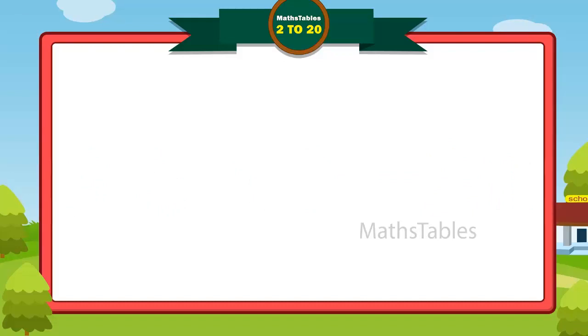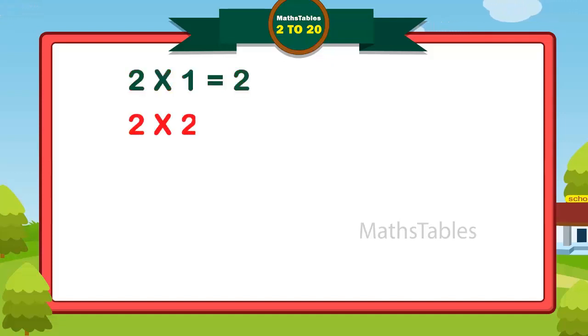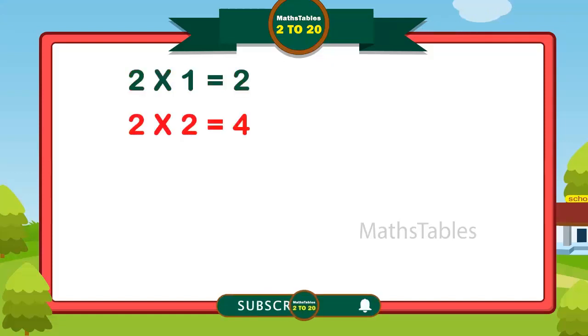Two ones are two. Two twos are four. Two twos are four.